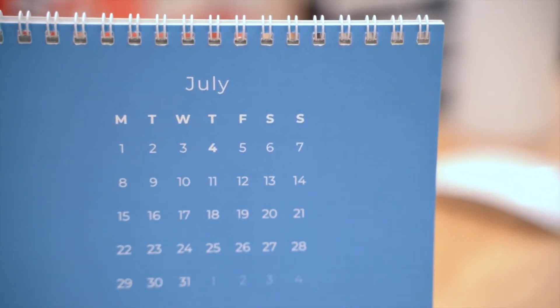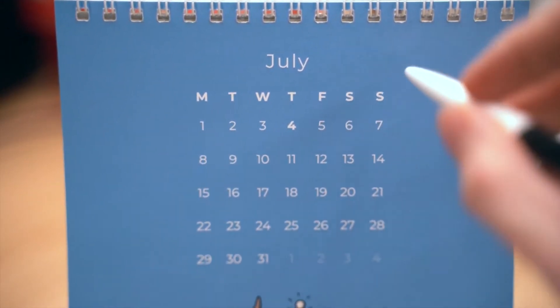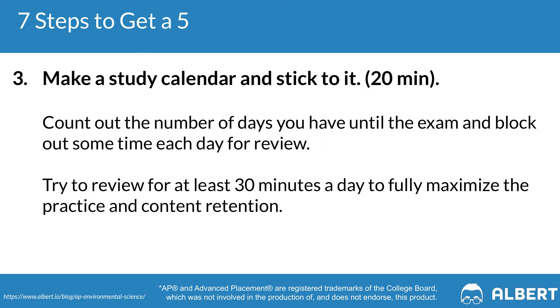The next step is to make a study calendar and stick to it. This is only going to take you about 20 minutes. The purpose is to count down the number of days you have until your AP Environmental Science exam and plan out how many study days you can incorporate. We recommend trying to review at least 30 minutes a day as much as possible in the months leading up to the exam. By chunking it into these bite-sized study sessions, it'll feel much more manageable to review everything you've learned over the course of the school year.